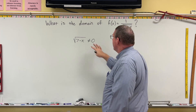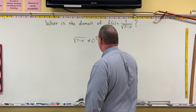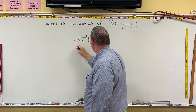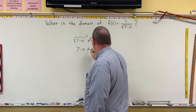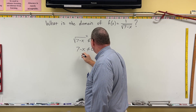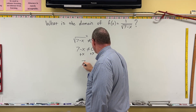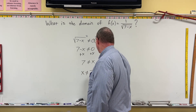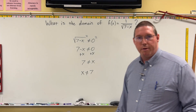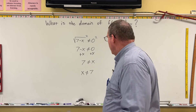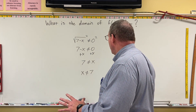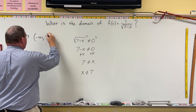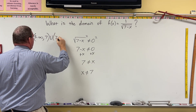We can't make the denominator equal zero. We can square both sides and get 7 minus x cannot equal zero. Adding x to both sides, we get 7 cannot equal x, which is the same as x cannot equal 7. So we know that x cannot equal 7.